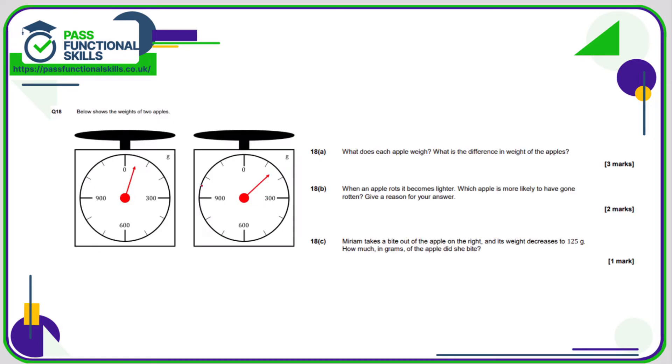Question number 18. What does each apple weigh? Here we're going up in 100s, and I think we need to assume that's halfway between 0 and 100, so that is 50 grams on the left-hand scale. On the right-hand scale, that is 150. So the difference in weight is 100 grams. When an apple rots, it becomes lighter. Which apple is more likely to have gone rotten? Well, it's going to be the apple on the left-hand scale because it's lighter. Miriam takes a bite out of the apple on the right, and its weight decreases to 125. So it was 150, now it's gone down to 125 grams, so therefore she must have taken a bite of 25 grams.